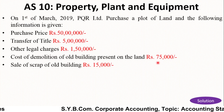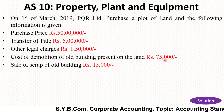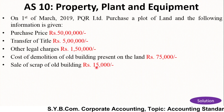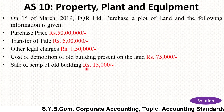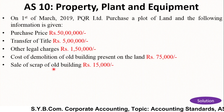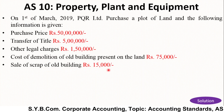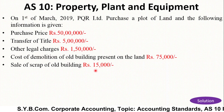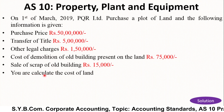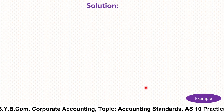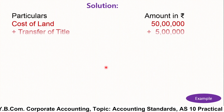It means we are purchasing a plot of land where a building is situated, and the demolition cost of that building is rupees 75,000 — this is the cost paid to clear the land. Sale of scrap of the old building is rupees 15,000, so it is our income. The 75,000 is our expense to be added to the cost of land, while the income from the sale of scrap should be deducted from the cost of the asset.